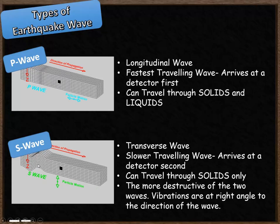So these particles here are moving up and down as the earthquake moves across the screen. It's a slower travelling type of wave and is going to arrive at your detector second. This type of wave can only travel through solids. It's the more destructive type of wave because the vibrations are at right angles to the direction that the wave is travelling.